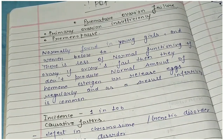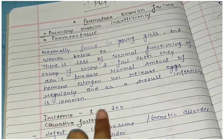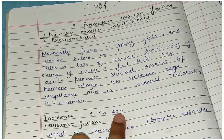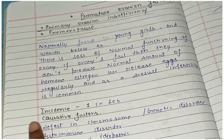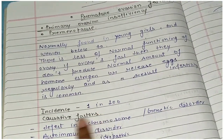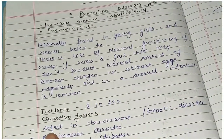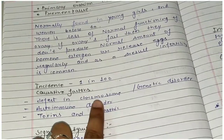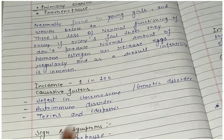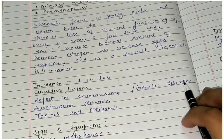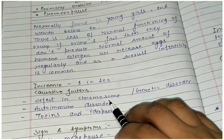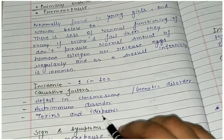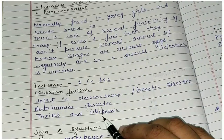The incidence is 1 in 100 females. Causative factors include a defect in chromosome, genetic disorder, autoimmune disorder, toxins, or it can be idiopathic.